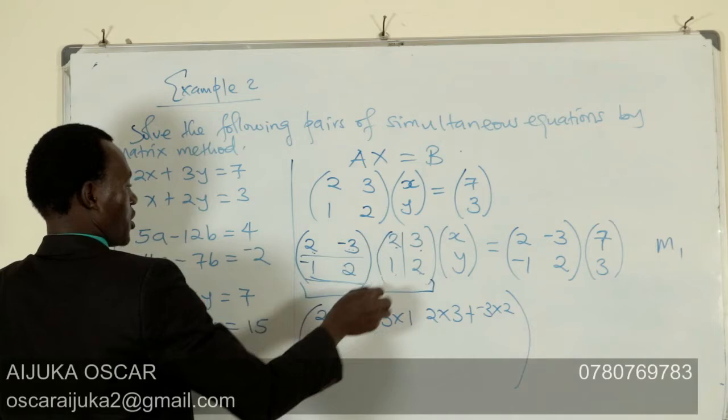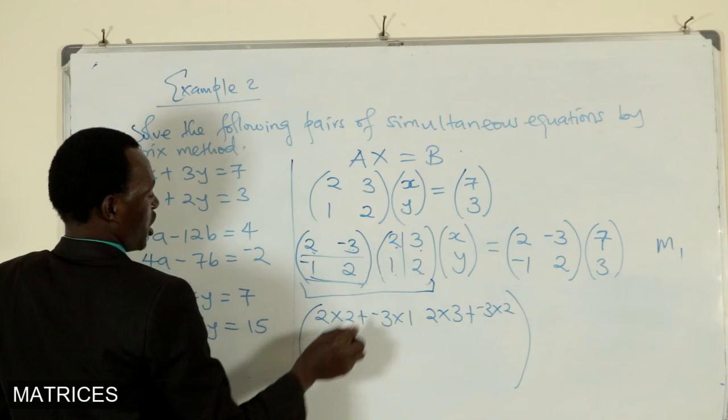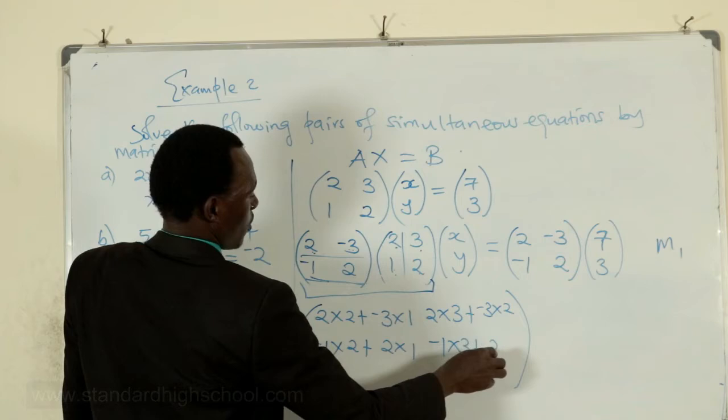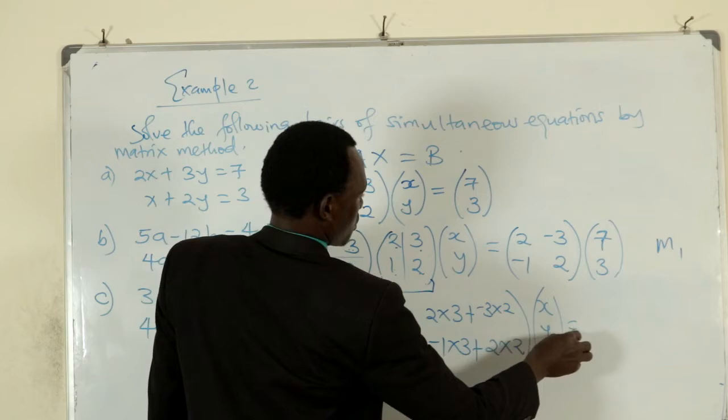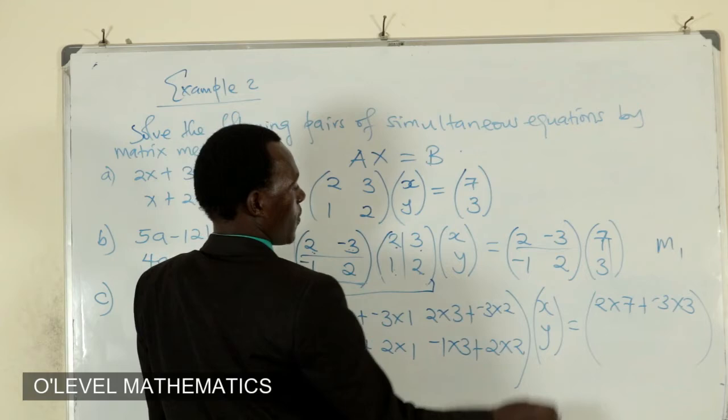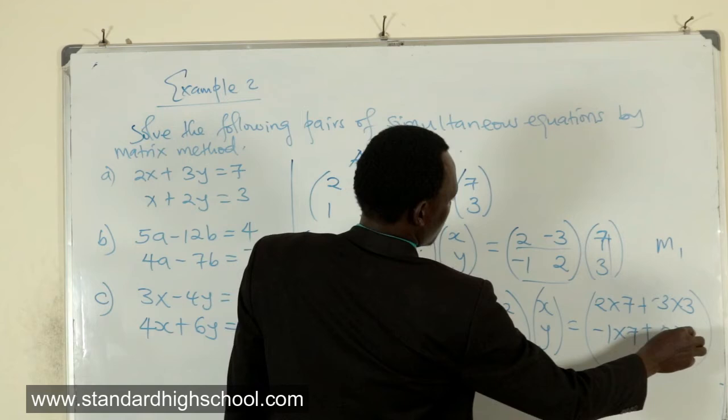The next row, this row must multiply in each of the columns of the second matrix, and we shall have negative 1 times 2 plus 2 times 1. Still, this very row in this column, negative 1 times 3 plus 2 times 2, times x, y is equivalent to, also carrying out matrix multiplication on this side, a row by column, 2 times 7 plus negative 3 times 3, and negative 1 times 7 plus 2 times 3.